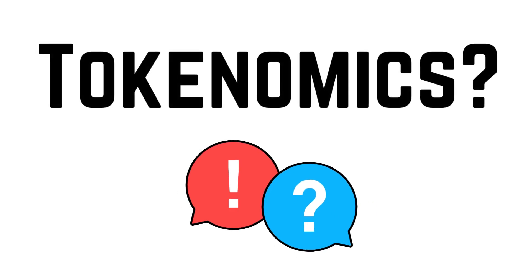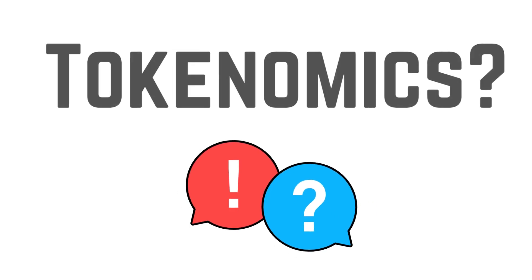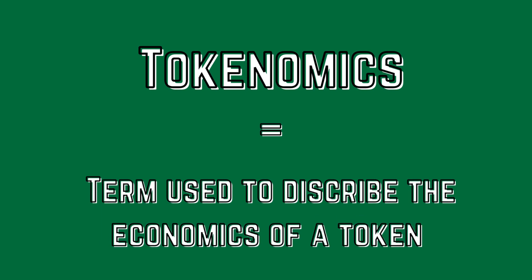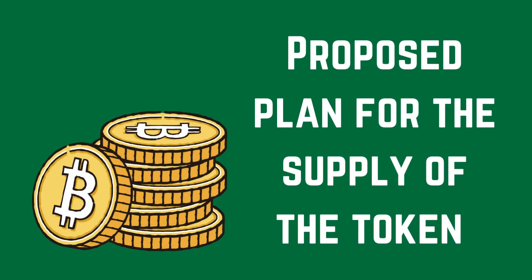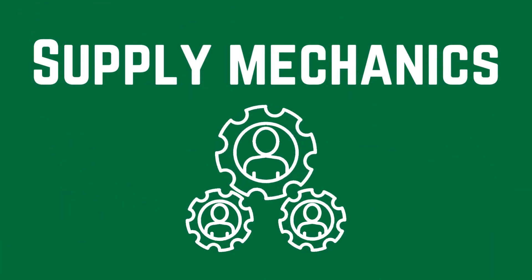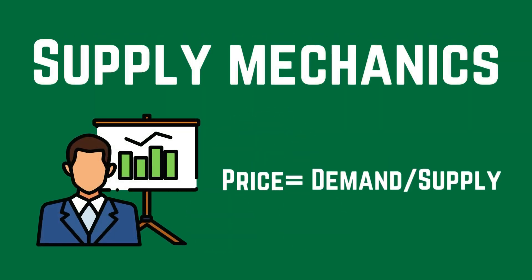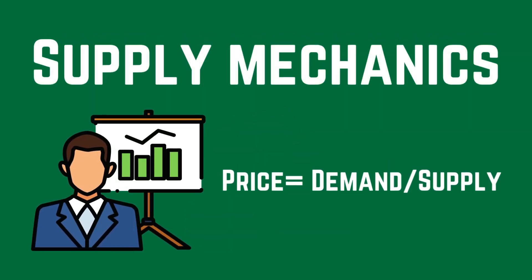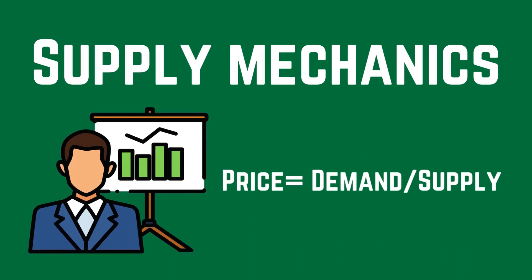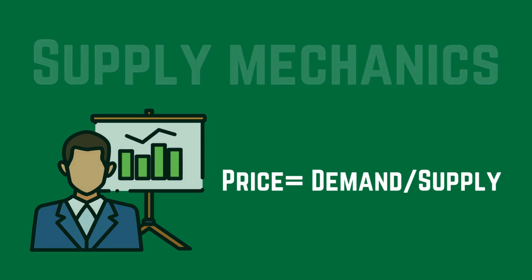Today we're going to explain the tokenomics of any crypto or any token. Tokenomics is a term used to describe the economics of a token. At the bare minimum, it describes the proposed plan for the supply of the token. By determining the supply mechanics of a token, we are able to partly determine the price of that token. Simply put, price is demand divided by supply.